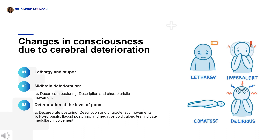Further deterioration at the level of the pons will present with decerebrate posturing, fixed pupils, and a positive cold caloric test, which is seen when there is a sustained deviation of both eyes toward the ear being stimulated with cold water, indicating involvement of the vestibular cochlear reflex. Decerebrate posturing involves neck extension, clenched jaws, pronated and extended arms close to sides, and extended legs with plantar flexion.